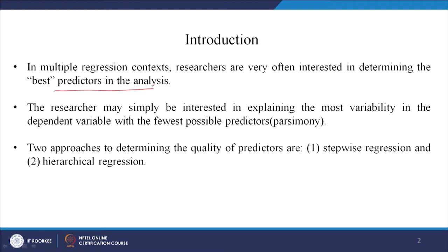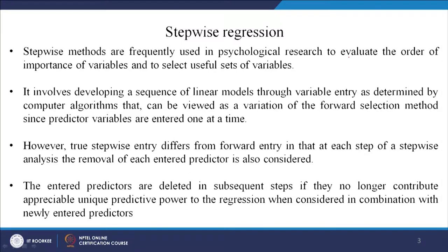Which is the best predictor when I have three or four predictor variables — my independent variables? The researcher may simply be interested in explaining the most variability in the dependent variable with the fewest possible predictors. A model that explains the highest variance with the lowest number of independent variables is a good model. This is because research says models should be parsimonious — you should not utilize unnecessarily excessive variables. The idea is to have the best output with minimum input. Two approaches to determine the quality of predictors are stepwise regression and hierarchical regression.